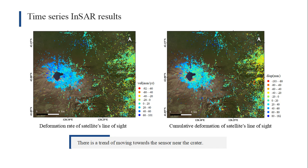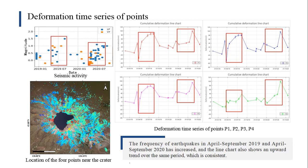Those two maps show that the deformation mainly occurs near the crater, with maximum deformation of approximately 40 mm. Deformation time series of four points around the crater are depicted to analyze the evolution of deformation, from which we can see there is a slight inflation annually from April to September in 2019 and 2020. During the same period, the frequency of seismicity records is also increasing.